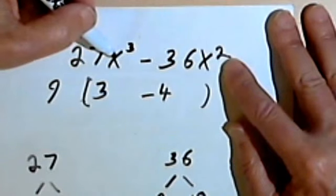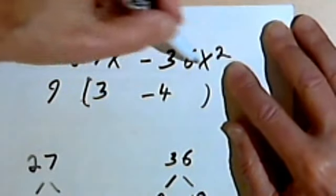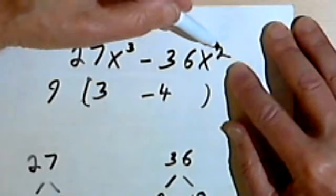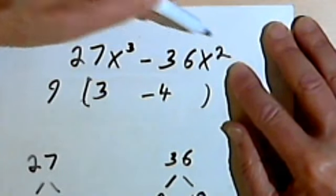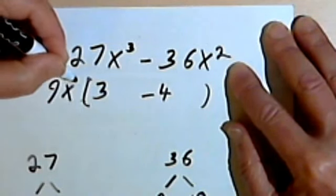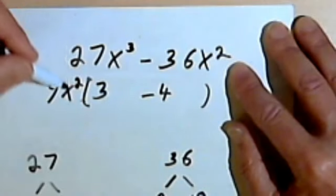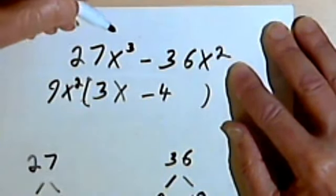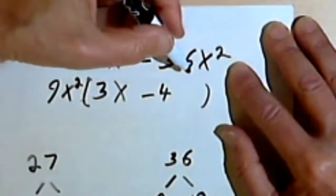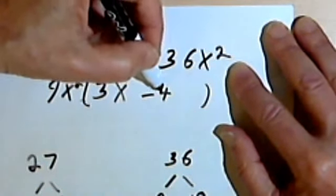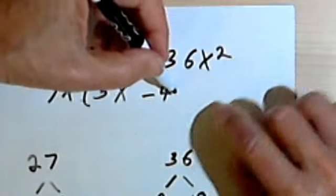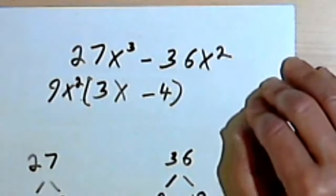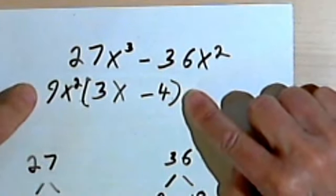And all I've got to do is deal with the variables. So I've got x to the 3rd and x squared. I'm looking for the smallest exponent, and that's what I'm going to pull out. So I've got x squared. x squared divided into x to the 3rd is x. x squared divided into x squared is 1, which I'm not going to bother to write since I have a negative 4 here already. So I'll just make my parentheses a little closer, and this is going to be my factorization.